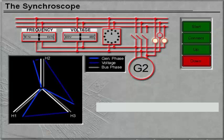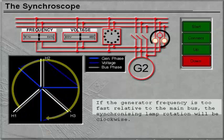If the generator frequency is too fast relative to the main bus, the synchronizing lamp rotation will be clockwise.